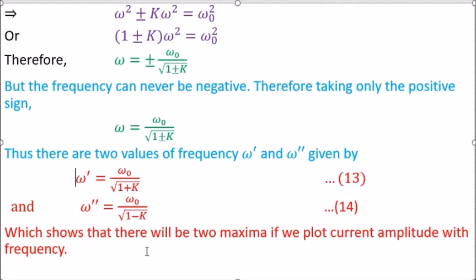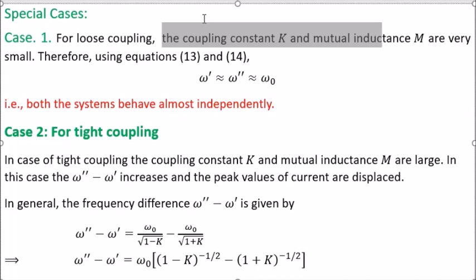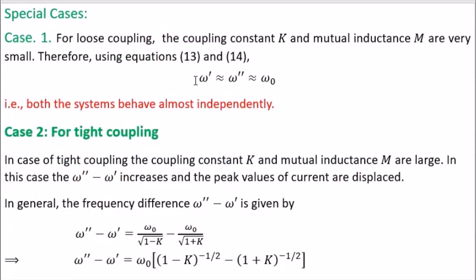This gives two values of omega. The first frequency omega dash equals omega naught over the square root of (1 plus k) — equation 13. The second frequency omega double dash equals omega naught over the square root of (1 minus k) — equation 14. These are the two frequencies at which the current amplitude will be maximum. Both correspond to two peaks in the current amplitude versus frequency graph.